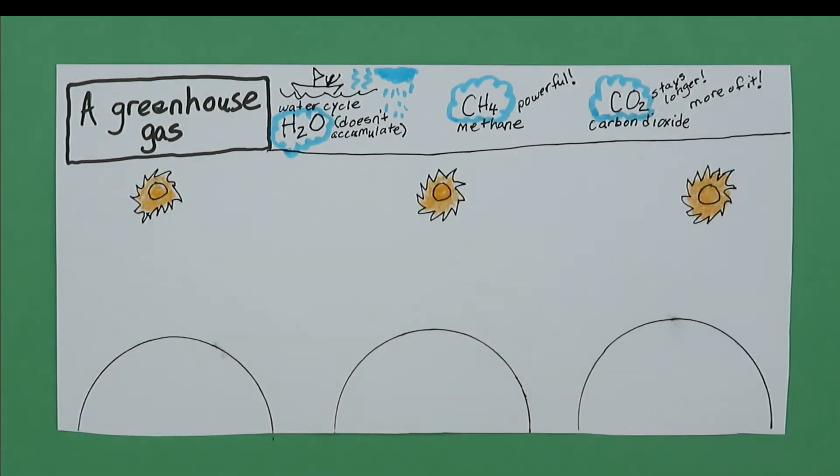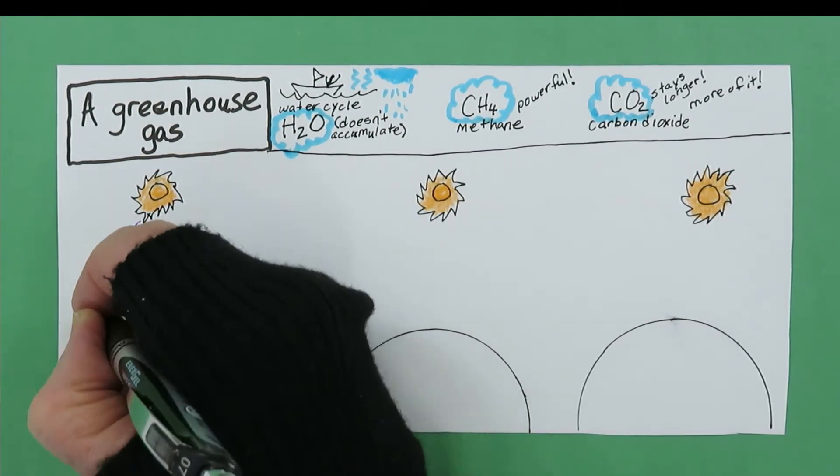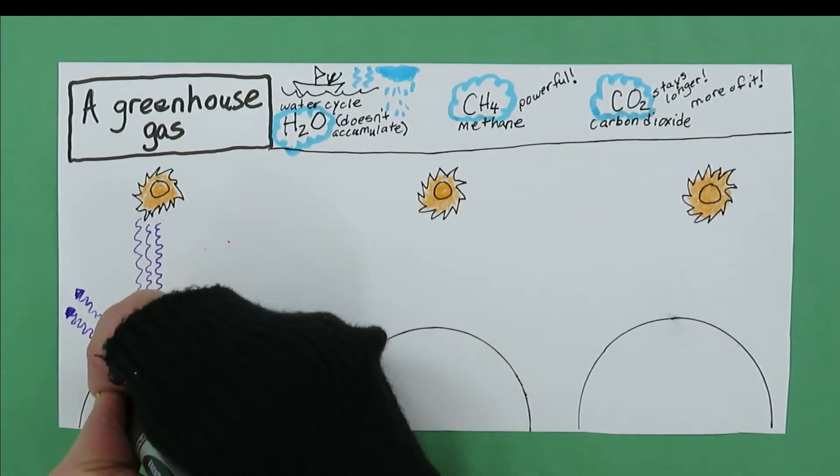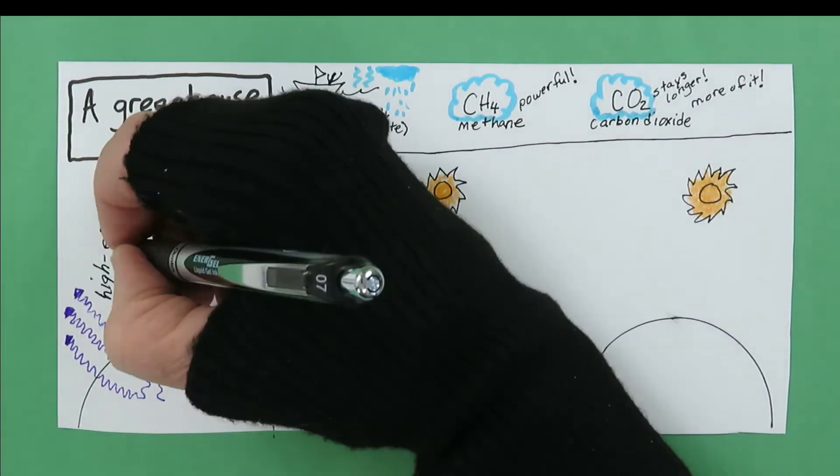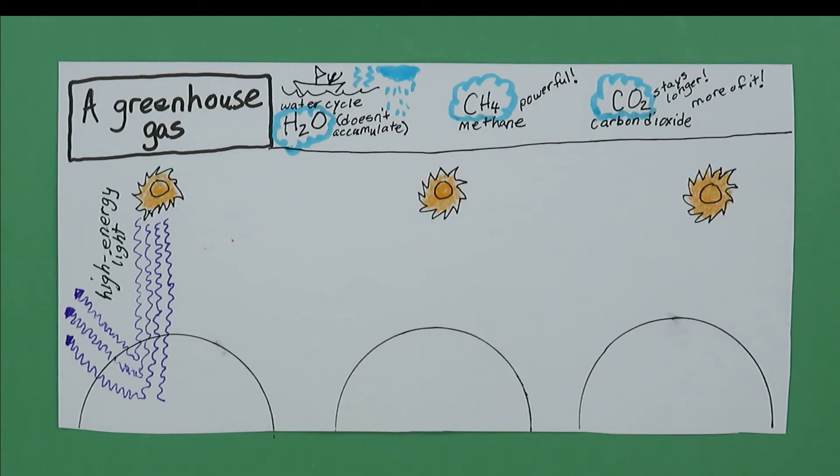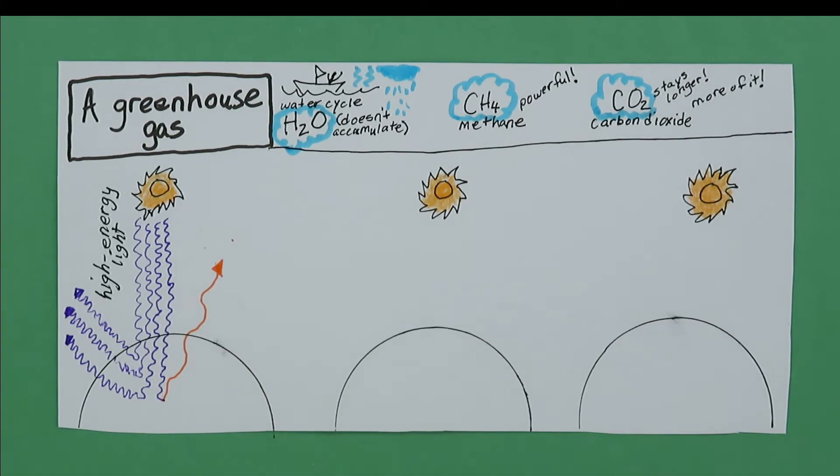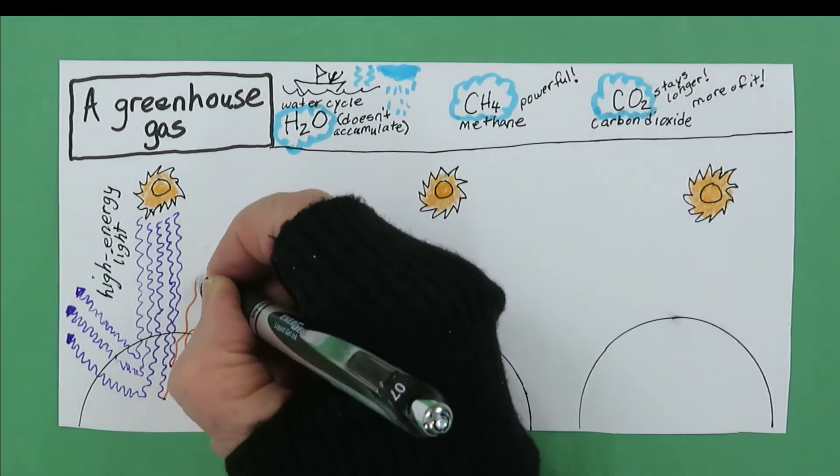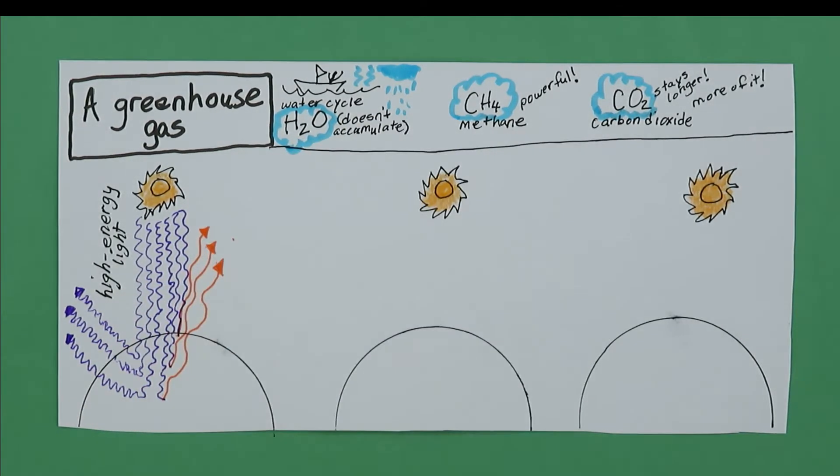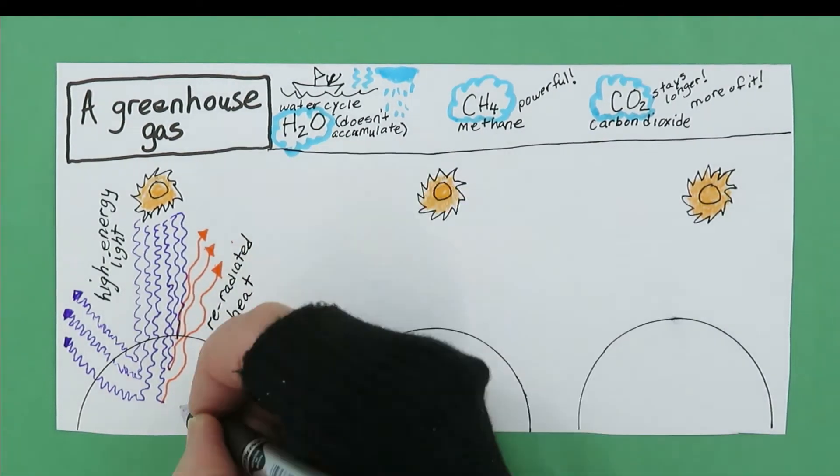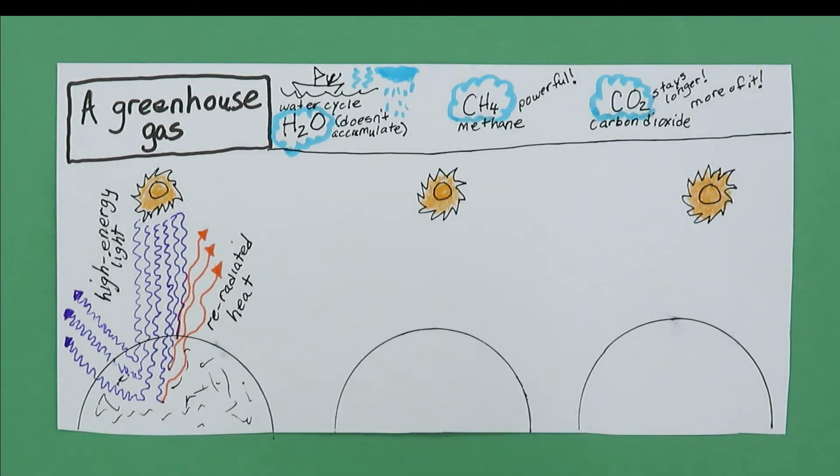The first Earth has no greenhouse gases. High energy light from the sun hits this Earth. Some reflects back to space, but some is absorbed by the Earth and transformed into heat that is re-radiated. Without greenhouse gases to slow it down, that heat gets lost in space. This Earth is a frozen rock where life cannot exist.